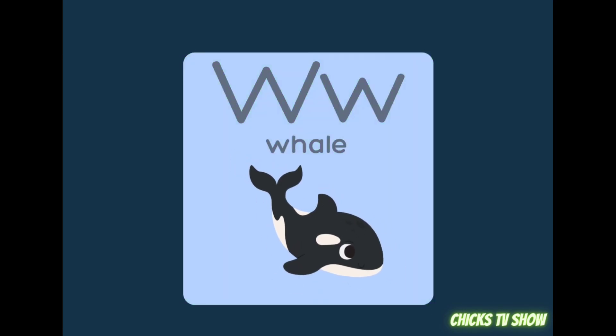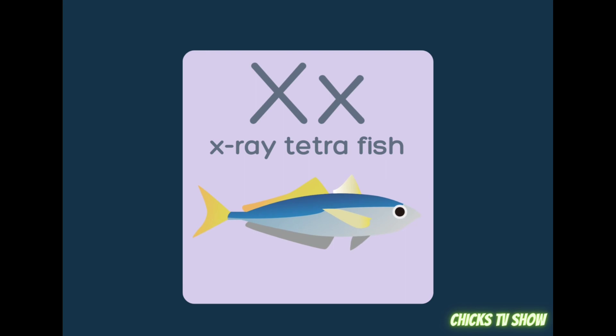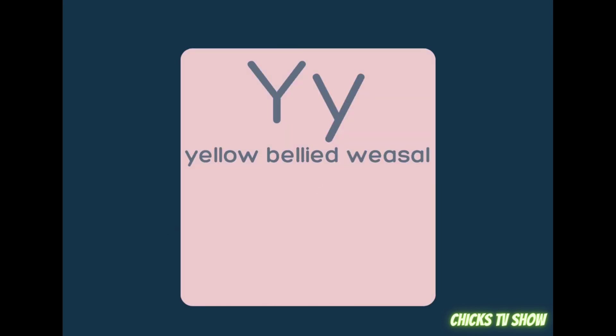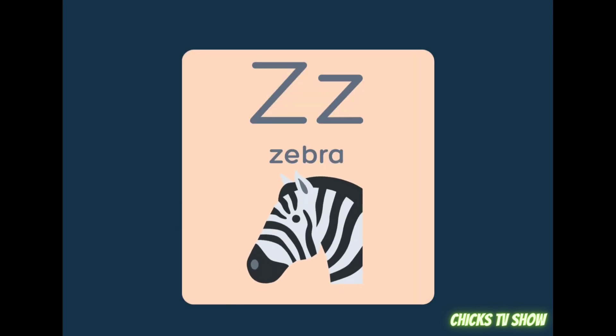W is for whale, X is for excellent tetrafish, Y is for yellow billet weasel, Z is for sea.